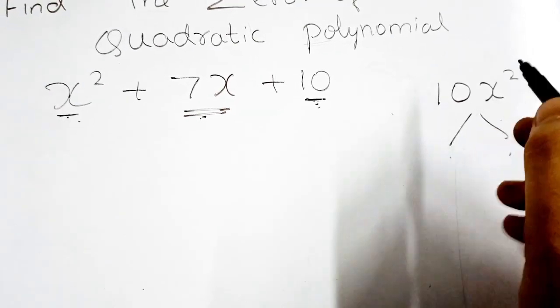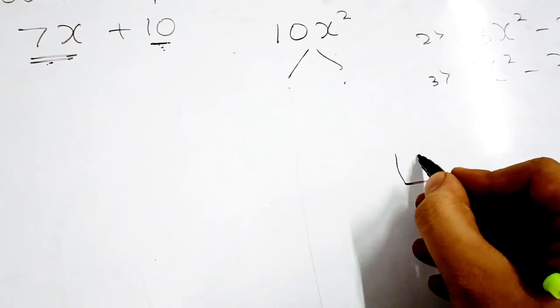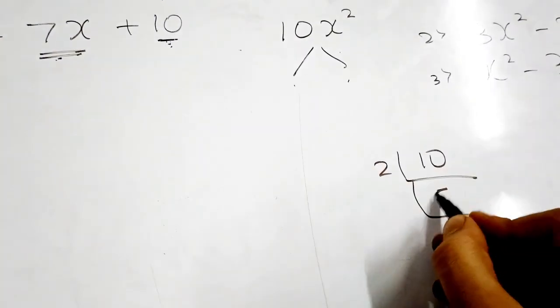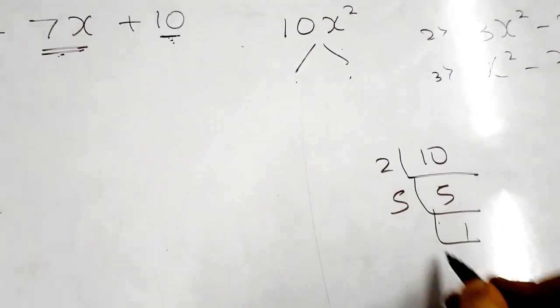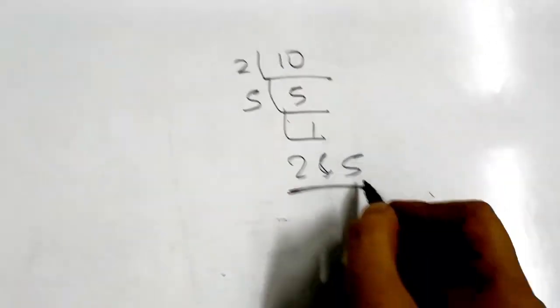So here 10, we know that 5 twos are 10, and 5 plus 2 equals 7. But in other problems also you can do it by finding the factors. 10 means 2 fives, or 5 and 2 are the factors. 2 plus 5 is 7.